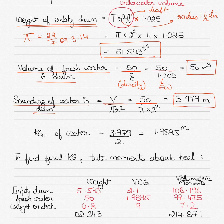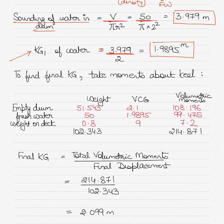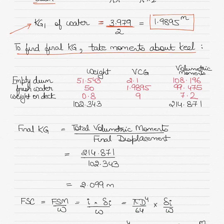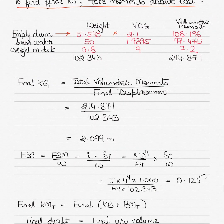The KG of the fresh water will be half the height to which water was filled: 3.979 ÷ 2 = 1.9895 meters, because the center of gravity is at the mid-height of the water. To find the final KG, take moments about the keel. First: weight of empty drum multiplied by its KG of 2.1 meters (given in the question), giving the first volumetric moment.